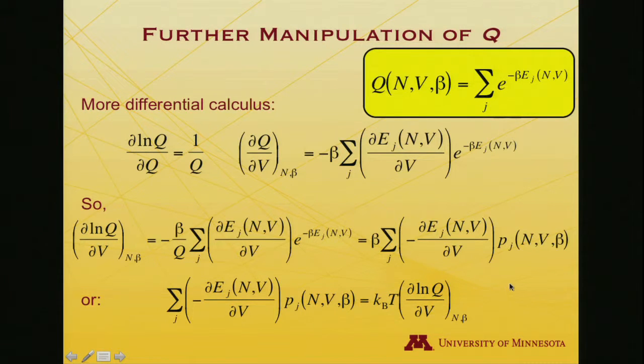I don't have to write it in terms of beta, I can include T here. I've got beta here, I move it over to another side and make it kT. I have sum over J minus this partial derivative probability. I've taken beta and moved it over here and multiplied this quantity. So I get kT partial log Q partial V.